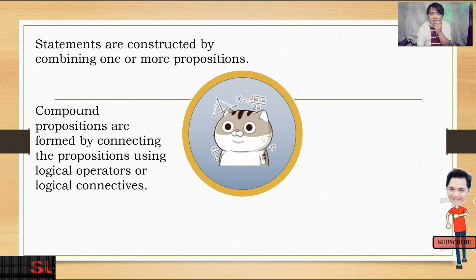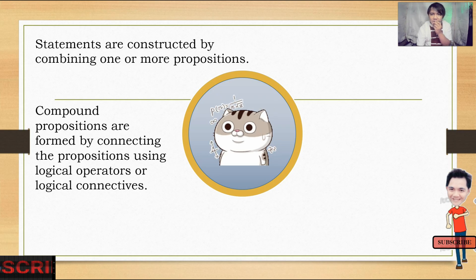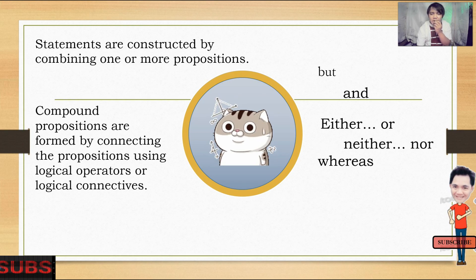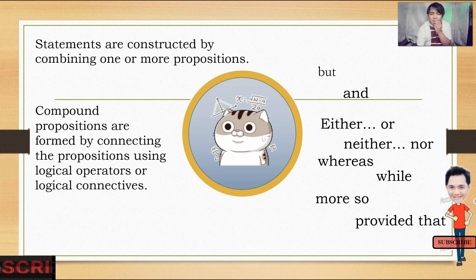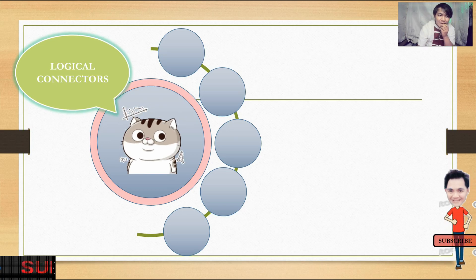In logic, we use the logical operators or logical connectives. In English, we have connectors like but, and, either, or, neither, nor, whereas, while, more so, provided that, and others. In logic, we have the logical connectors.